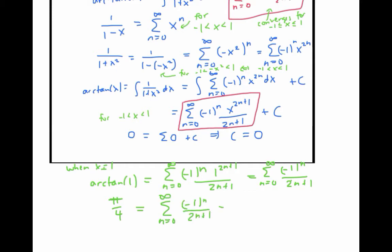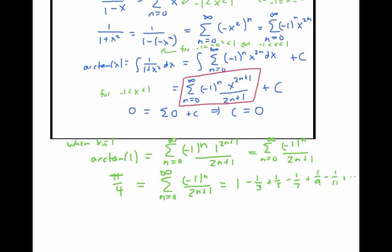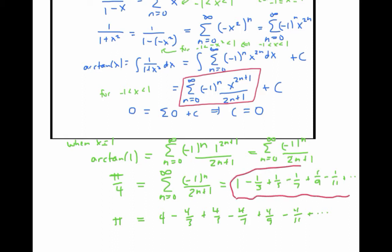Let's write out the first few terms of this series and see what it looks like. The first term is one, the next term minus a third, plus a fifth, minus a seventh, plus a ninth, and so on. In other words, multiplying both sides by four, we get that pi is equal to four minus four thirds plus four fifths minus four sevenths plus four ninths minus four elevenths, and so on. If you've ever wondered how to generate digits for pi, here's one way. We found the sum of a natural series to look at, and we found a beautiful formula for pi.